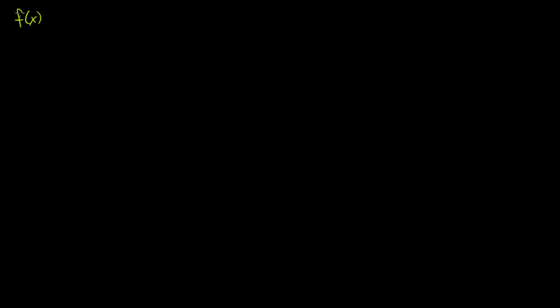Let's say that we have some function f of x. Let me graph an arbitrary f of x. That's my y-axis, that is my x-axis, and maybe f of x looks something like that. What I want to do is approximate f of x with a Taylor polynomial centered around x is equal to a.